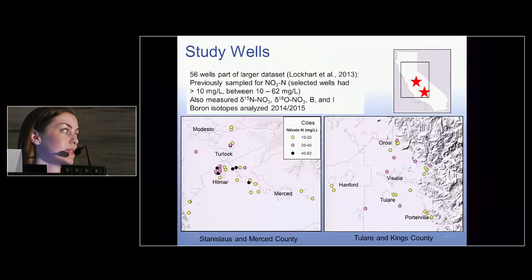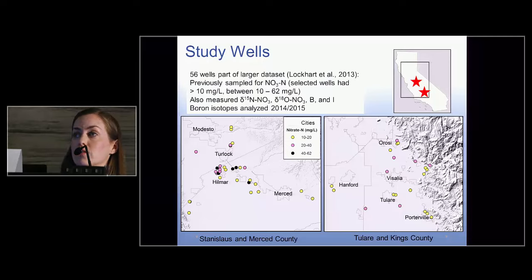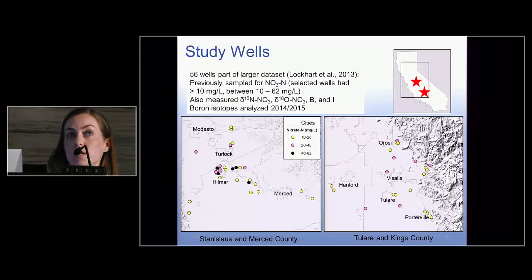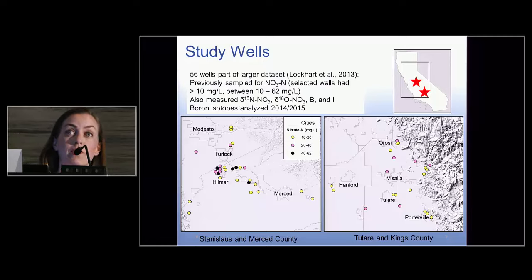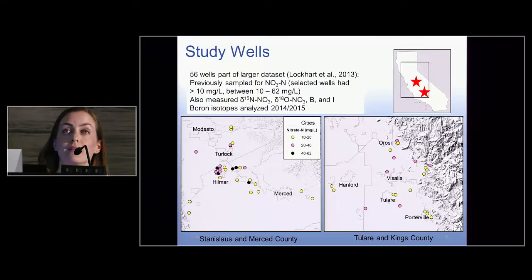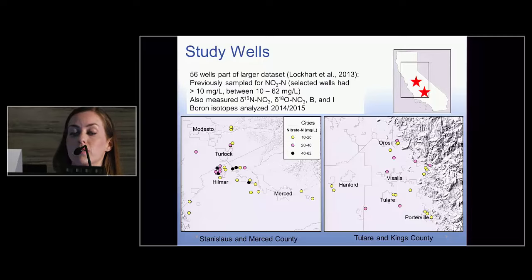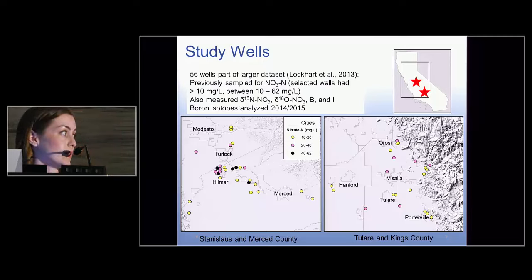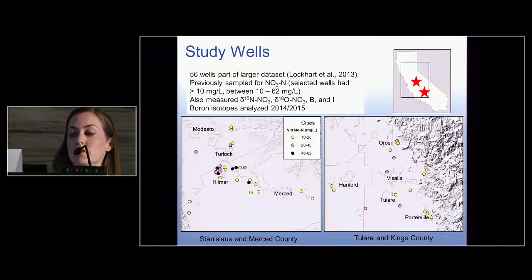Our study wells were part of a larger study sampled originally in 2010–2011. At that time we analyzed for the nitrogen-oxygen isotopes of nitrate and iodine. I hand-selected wells that did not meet the drinking water standard for nitrate and for which we also had measurements for boron isotope analysis, ending up with 56 wells total where stored sample water was later analyzed for boron isotopes — about four years after original collection. We have two separate project areas: one in the northern San Joaquin Valley in San Joaquin and Merced County, and a more southern region in Tulare and Kings County.